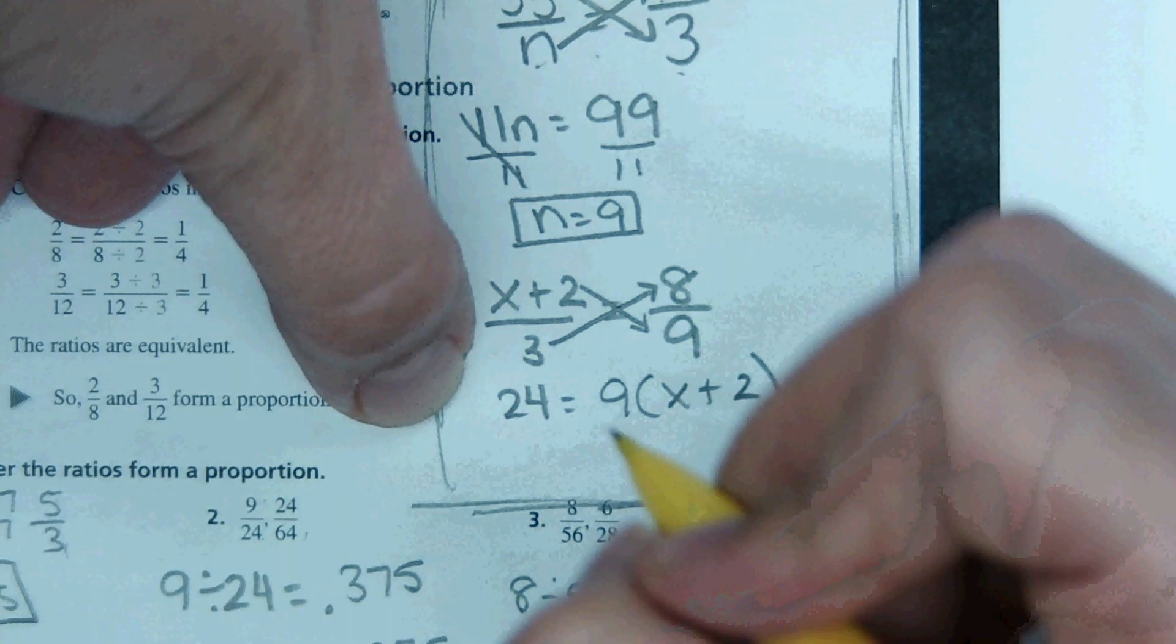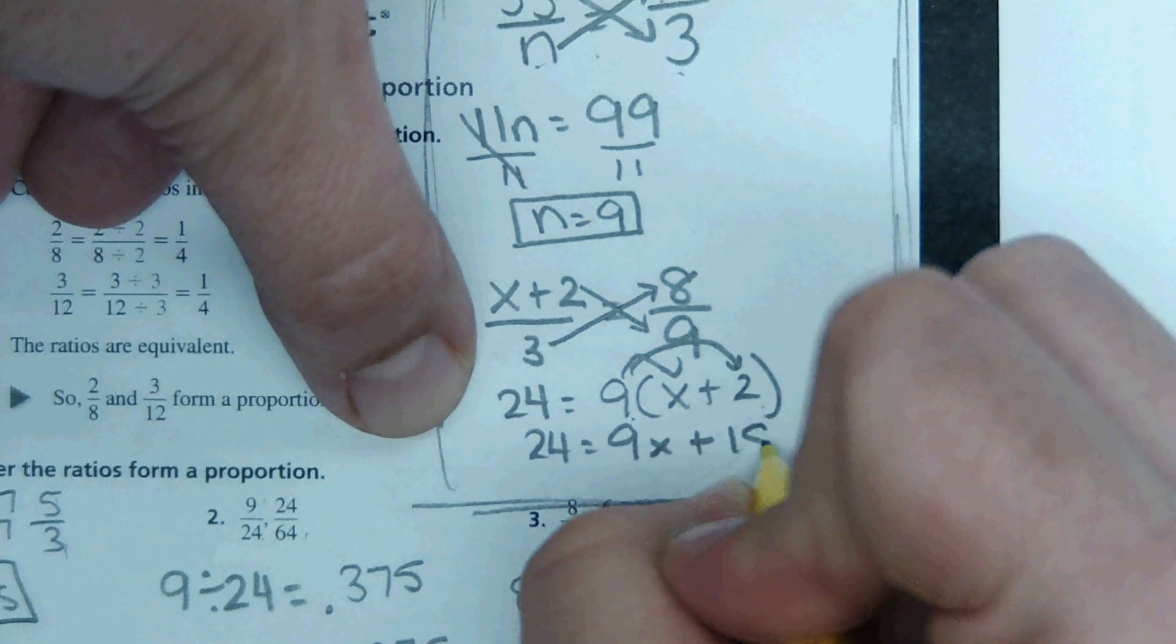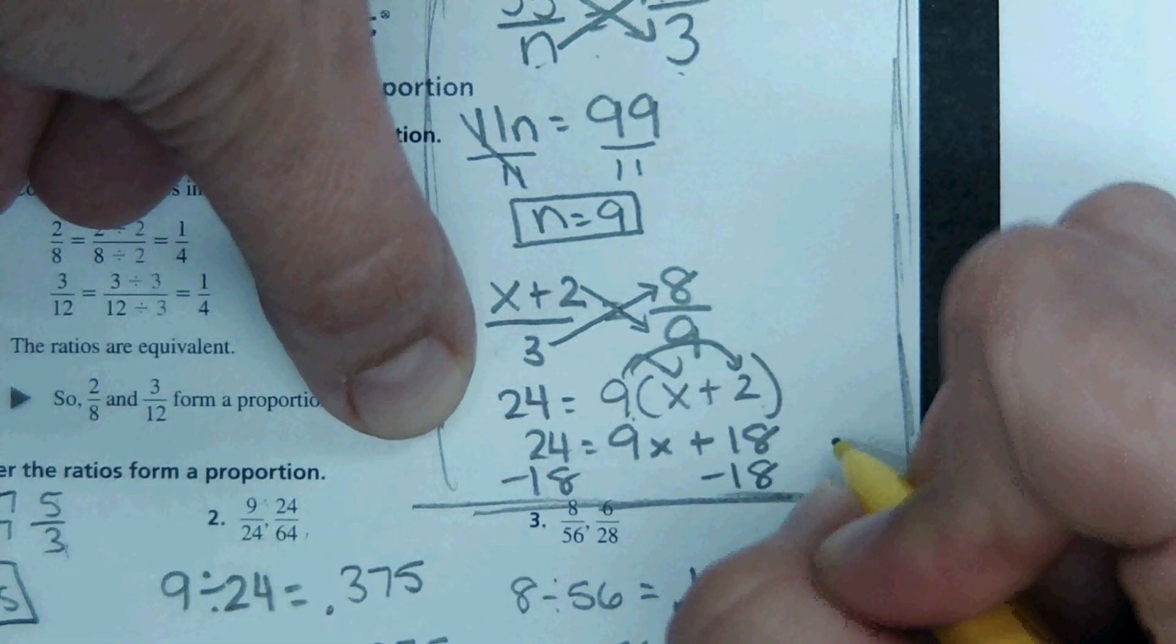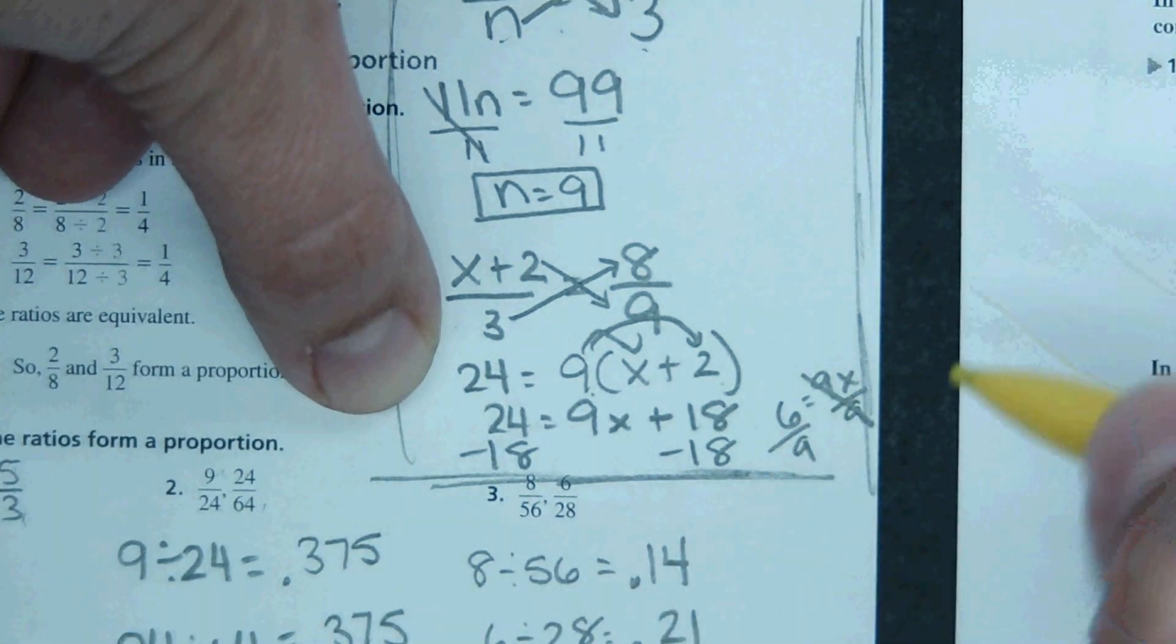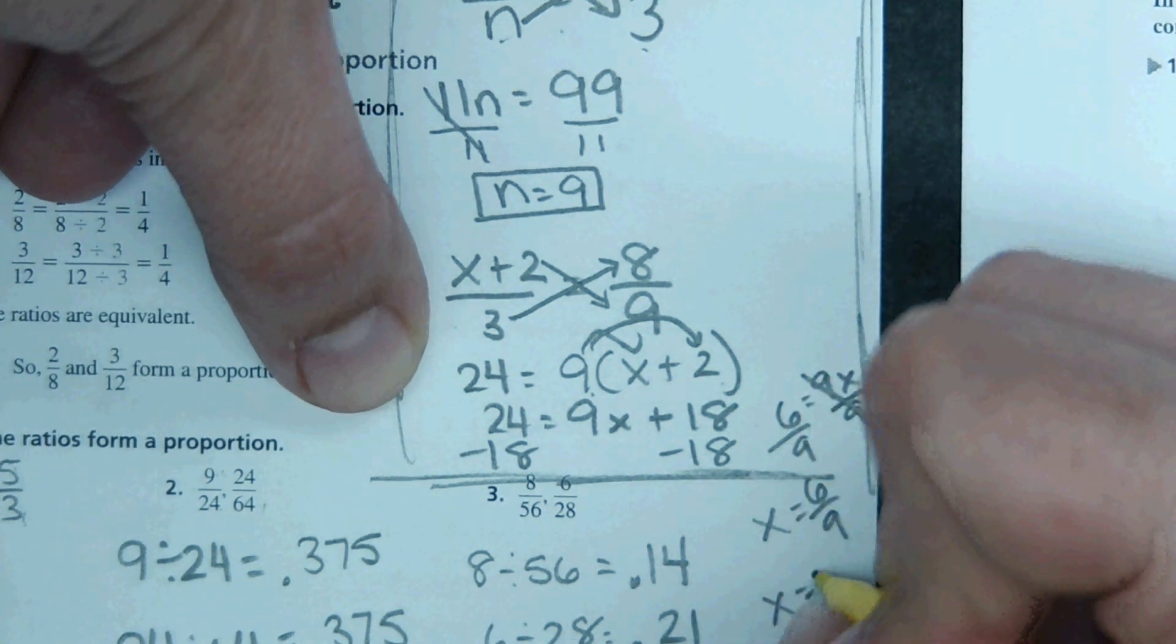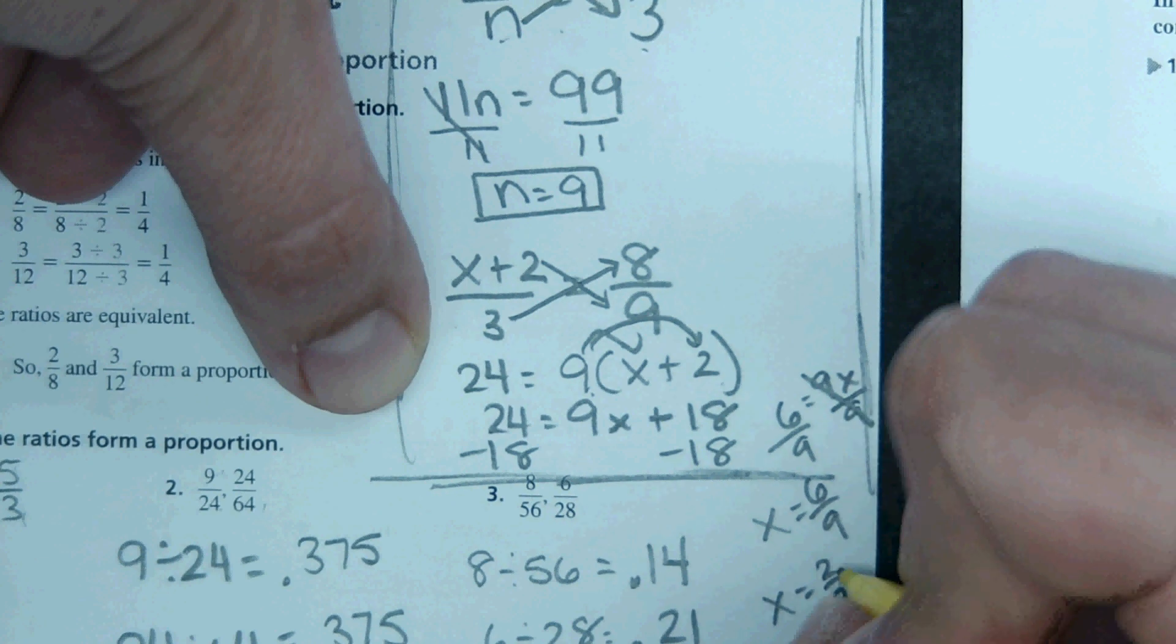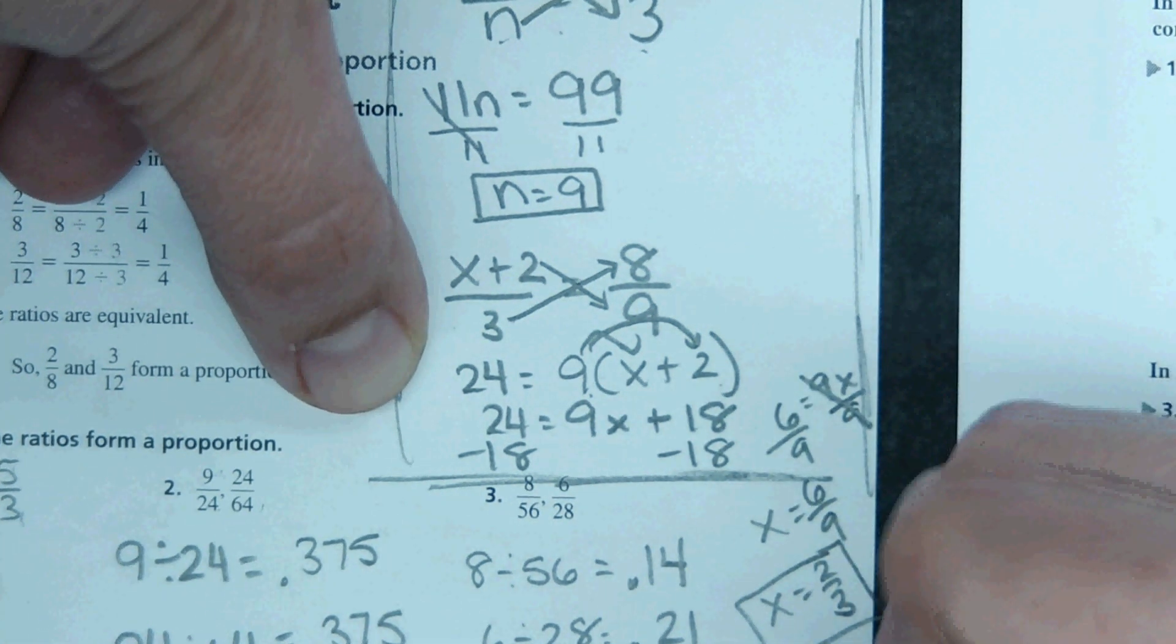And then you go through the solving process. Distribute this 9 to both of these terms. 24 equals 9x plus 18. Subtract 18 from both sides, 6 equals 9x. Divide by 9 on both sides. And x equals 6 ninths, or if you wanted to simplify it, it comes out to 2 thirds, or as a decimal 0.6 repeating.